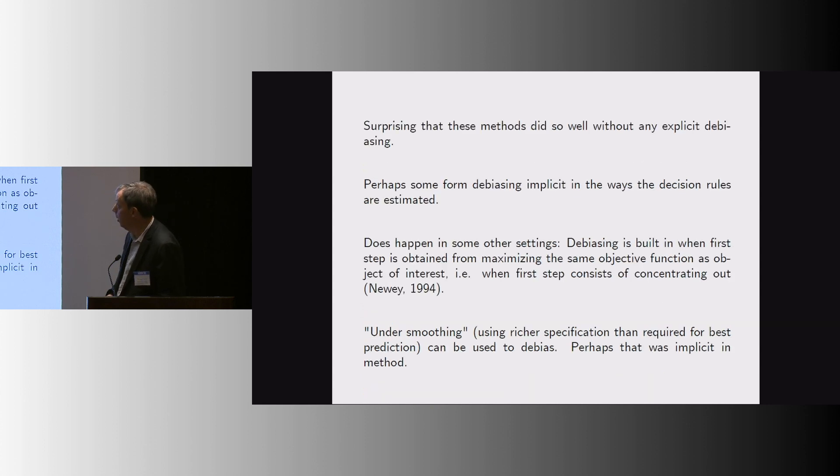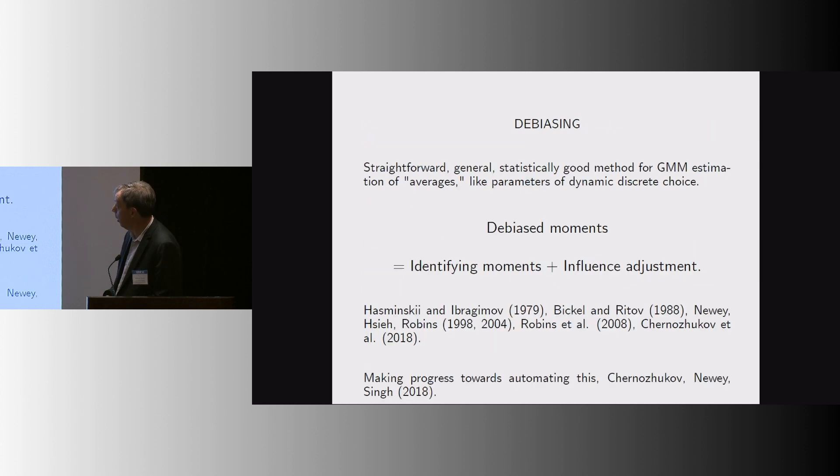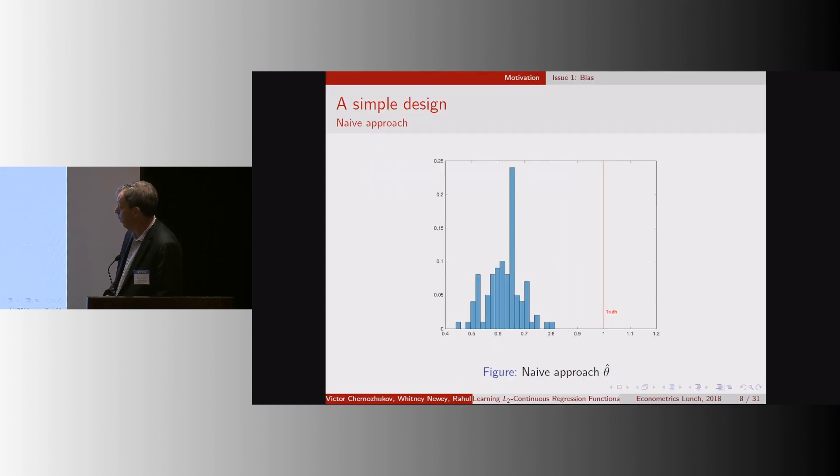so now go back, right? I mean, that sounds like what was done, right? You use machine learning, you estimate these choice probabilities, you go back and construct a value function. So, one question I have from my perspective is why did it work so well?